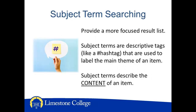Subject term searches provide a more focused result list. Subject terms are basically descriptive tags that are used to label the main theme or themes of an item. Subject terms are chosen by those who organize the database articles. The subject terms are often unique to a database, so an education database and a history database will have different designated subject terms. Articles about similar topics are grouped together under the same subject heading. Subject terms describe the content of the item.